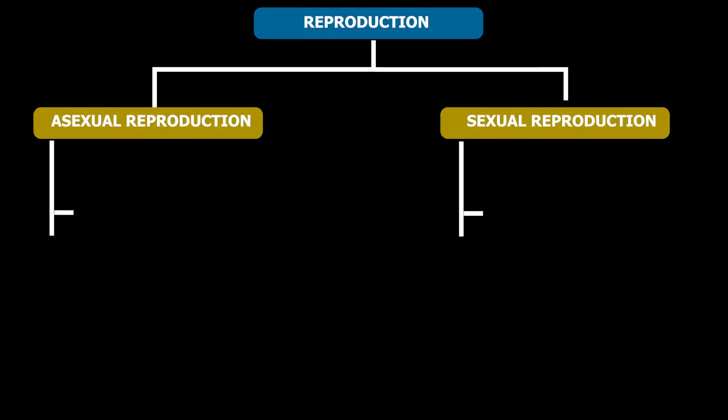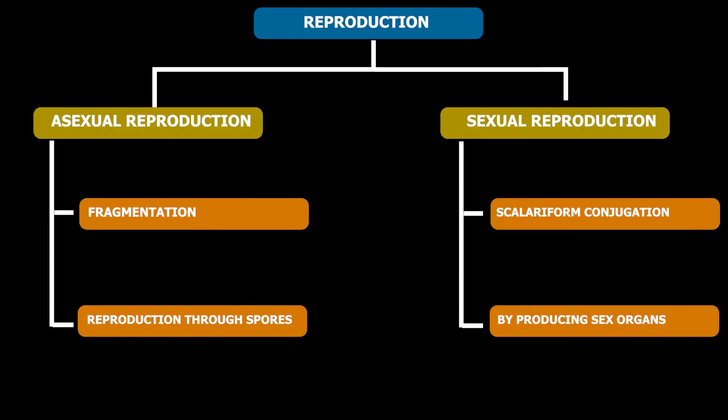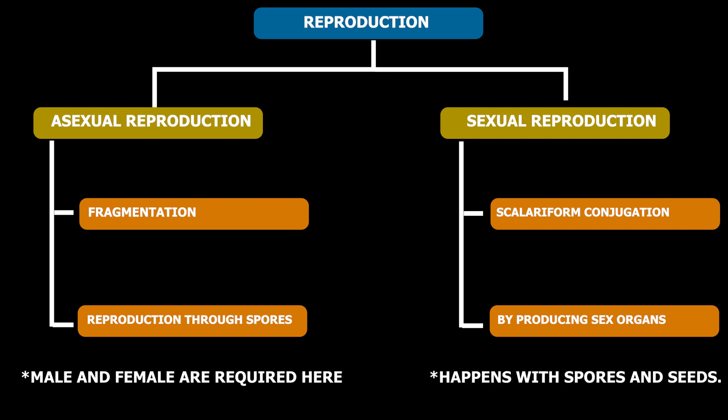Reproduction can be of two types: 1. asexual reproduction and 2. sexual reproduction. For sexual reproduction to take place, both male and female gametes are required. Asexual reproduction takes place through spores, etc.